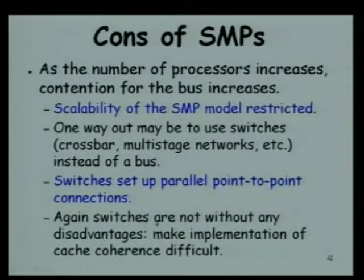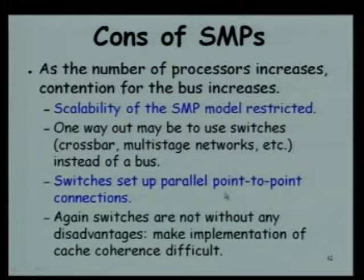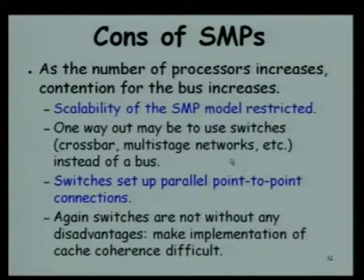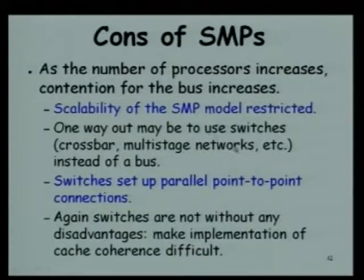If we have a point-to-point connection, then implementing cache coherence will become very difficult. The other thing that vendors are thinking of is to have multiple buses. As the number of processors in SMPs increases, we might have to use more than one bus, but for our discussions here we will consider only a single bus connecting the processors.